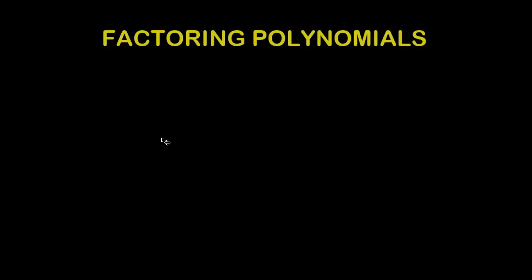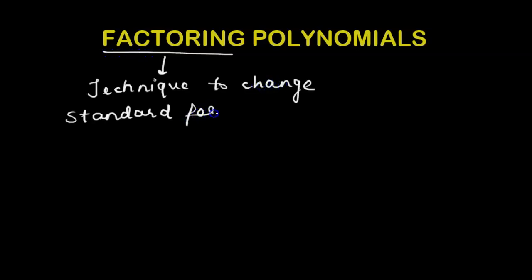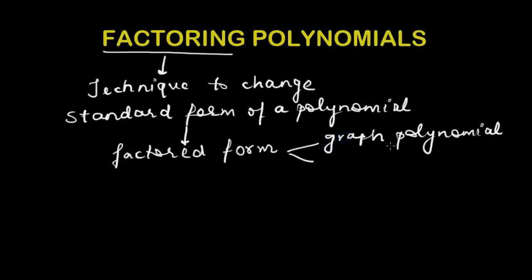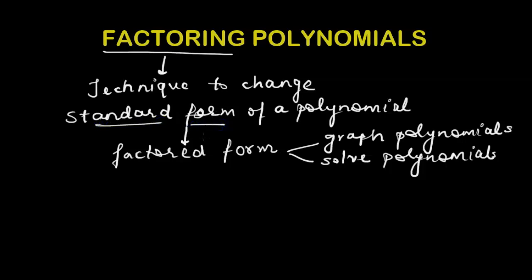In this lesson we would understand how to factor polynomials completely. Factoring is a technique to change the standard form of a polynomial to factored form. We need to do this because we can use the factored form easily to graph polynomials — which we covered in the previous unit — and also to solve polynomials. If we try to graph or solve the standard form directly, it would not be possible.